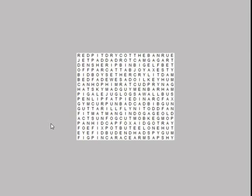If you click on the wrong word by mistake, you can just choose another one instead. Then click on OK to move on to the next item.